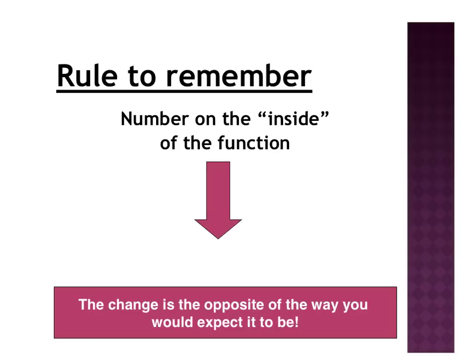A very important rule to remember: a horizontal transformation only occurs when the number is on the inside of the function — inside the part being squared, inside the absolute values, inside the square root. Whether it's added, subtracted, or multiplied, if it's on the inside, you have a horizontal transformation. Otherwise, it would be vertical.